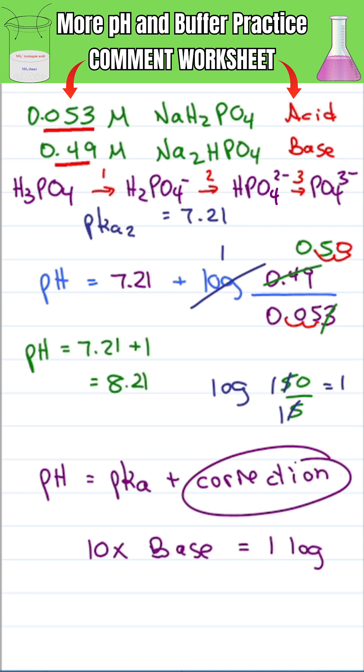My correction factor is 1 log unit, which will make the pH of 7.21 more basic. Raising the pH makes it more basic by 1 log unit for a new pH of 8.21.